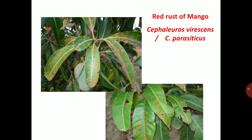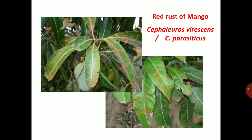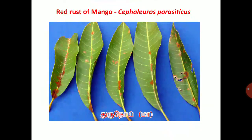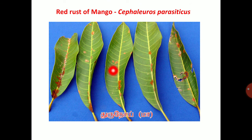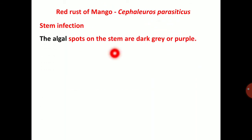This photo represents red rust of mango. In severe stage, it appears in red color. The organism is Cephaleuros parasiticus. This photo represents the typical symptoms. Regarding stem infection: the algal spots on the stem are dark gray or purple.